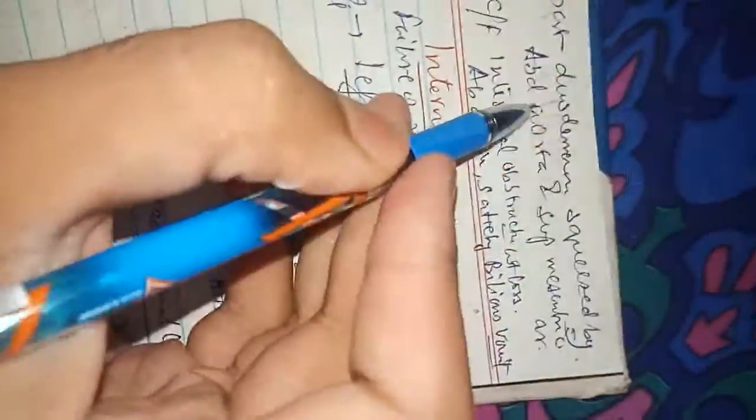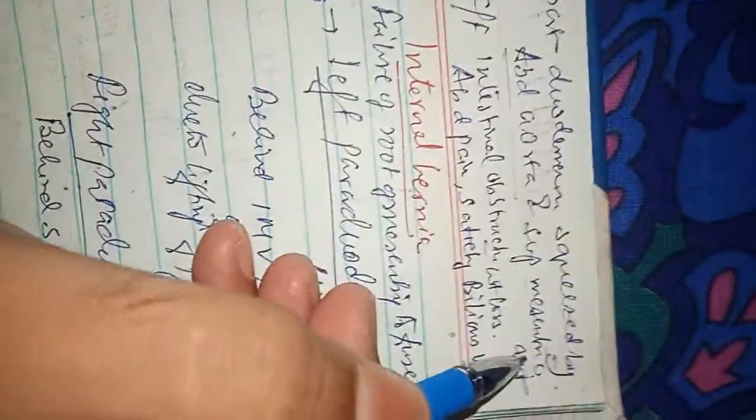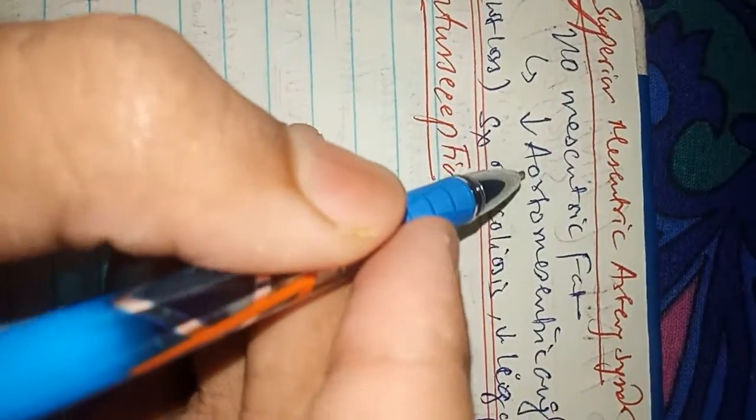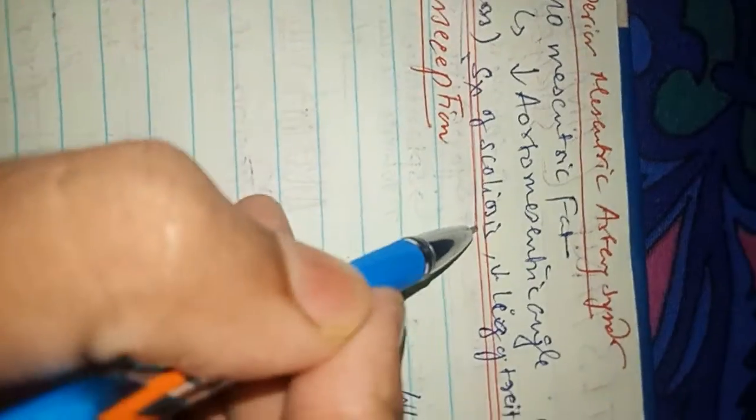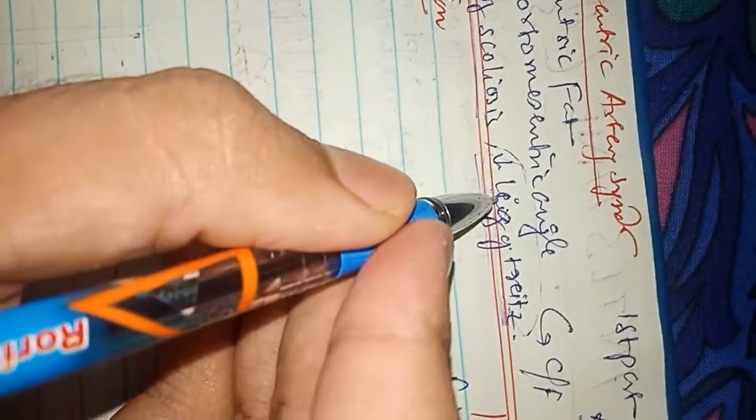Now coming to superior mesenteric artery syndrome. Superior mesenteric artery syndrome is a clinical condition where the third part of the duodenum is squeezed between the abdominal aorta and the superior mesenteric artery. Mesenteric fat normally provides a cushion and prevents this squeezing. Causes include excessive weight loss, surgery for scoliosis, or congenitally there is a reduction of the ligament of Treitz, causing a decrease in the aorto-mesenteric angle and squeezing of the duodenum.